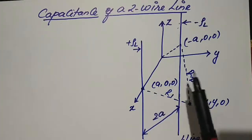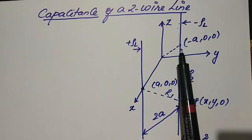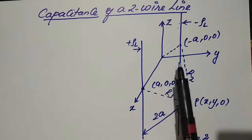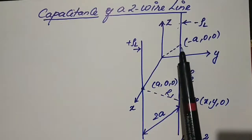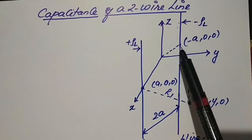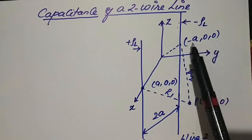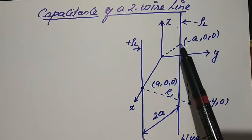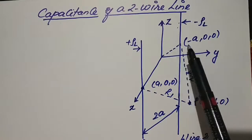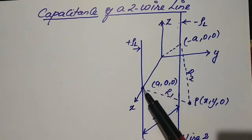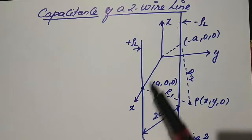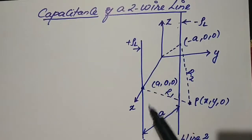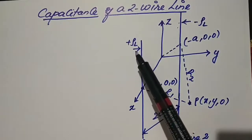Let us consider these two lines located at a distance: this is positive a and this is negative a. The coordinates at the negative point will be minus a, zero, zero — since it has only a negative x-value — and the other has a coordinate of a, zero, zero. This line has a positive line charge density of positive ρl coulombs per meter.